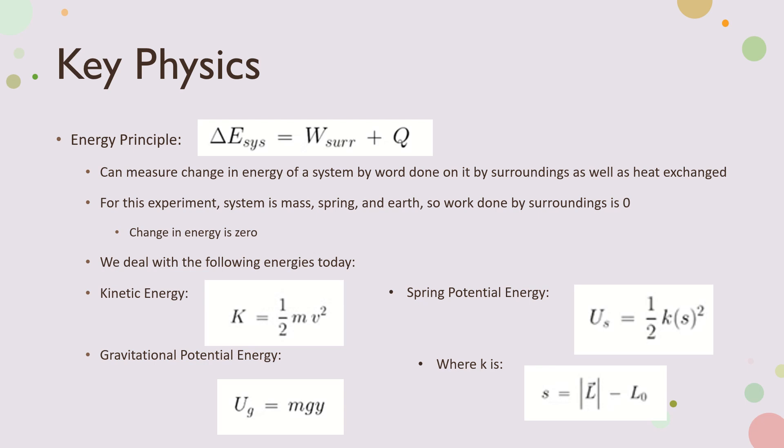So key physics on this one obviously is the energy principle. The change in energy of the system can be defined as the work done on the system plus the heat exchange with the system. For this experiment, however, I did choose the system to be the mass, the spring, and the earth. So there's no work done on the mass by the surroundings. So the change in energy is equal to zero and this is a key concept we'll see later.